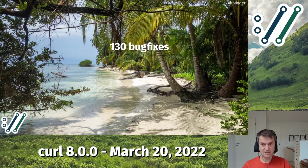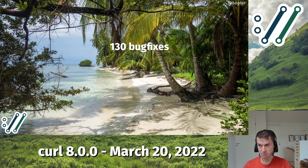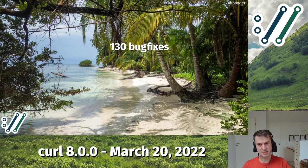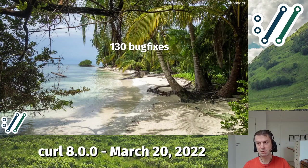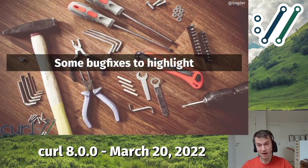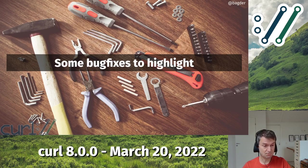We fixed 130 bug fixes in this release — an amazing number for 28 days, more than four per day on average. Many of those are tiny fixes: documentation fixes, test case fixes, and so on, but some are bigger and more noteworthy. I'm going to highlight a few that might be interesting to at least a bunch of users.